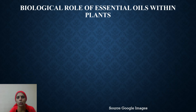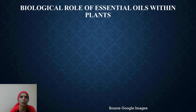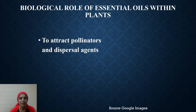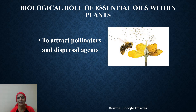Children, we should know the biological role of essential oils — what is their role within plants and why plants produce them. They are volatile, aromatic organic compounds and secondary metabolites produced as a result of some action, stress, or defensive mechanism. They are produced by plants to attract pollinators and dispersal agents through their aroma. You can see honey bees getting attracted to plants because of the production of these essential oils.